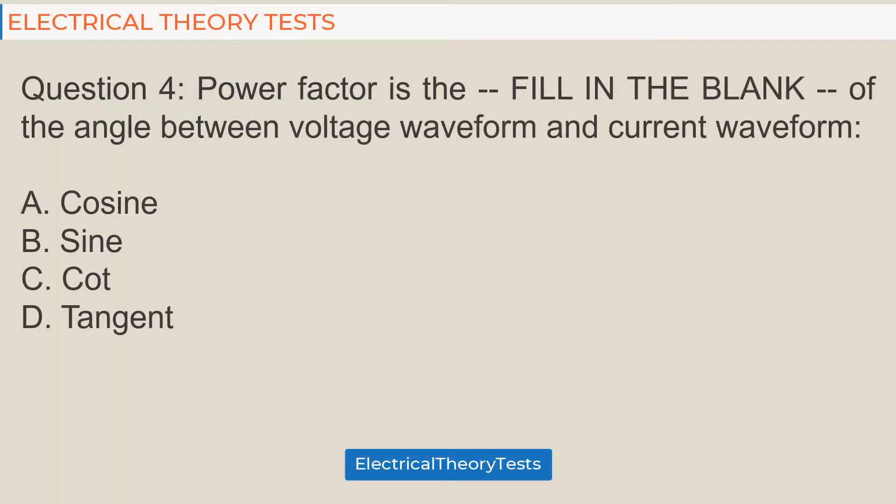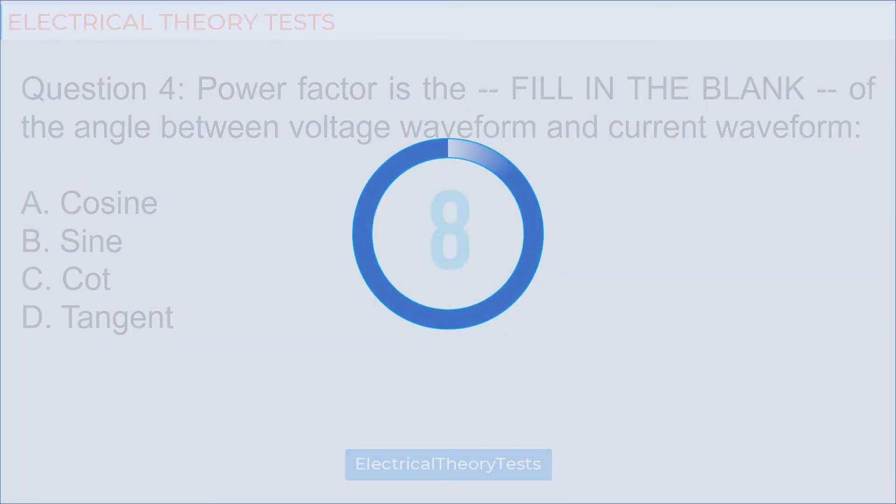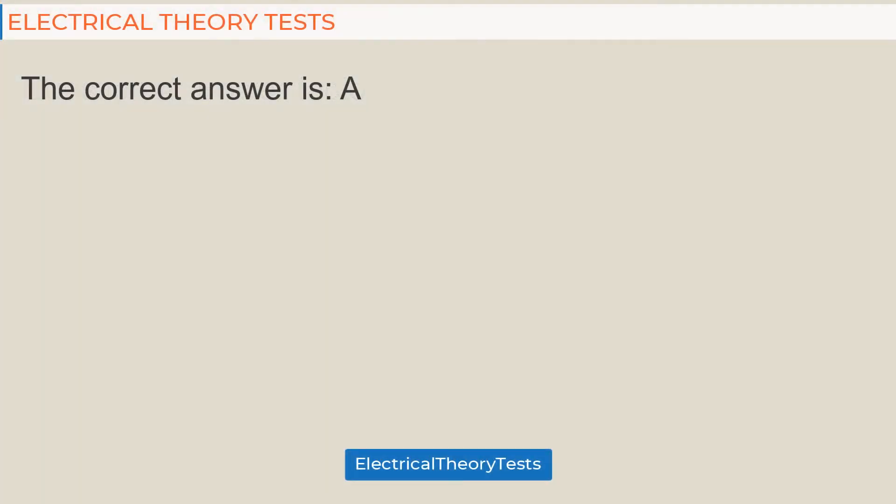Question 4: Power factor is the [fill in the blank] of the angle between voltage waveform and current waveform. A: Cosine, B: Sine, C: Cot, D: Tangent. The correct answer is A.